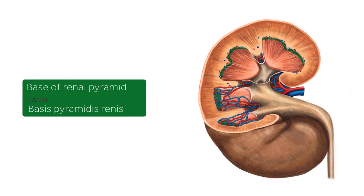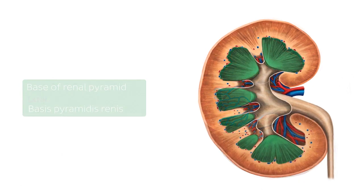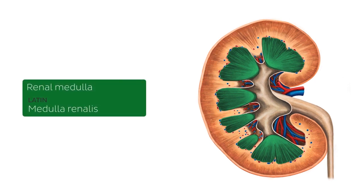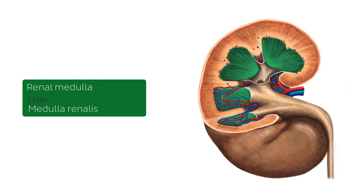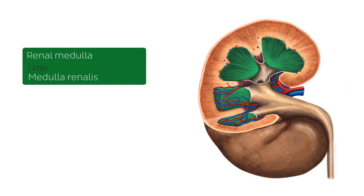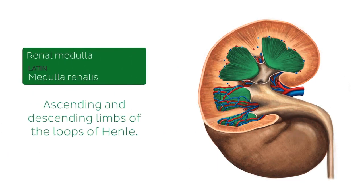The renal pyramids are formed by the renal medulla, which is the next structure we're going to be talking about. Now seen here highlighted in green, this is the renal medulla. The renal medulla is divided into renal pyramids that are separated by the renal columns of the renal cortex. The ascending and descending limbs of the loops of Henle, as well as the collecting ducts of nephrons, are located in the renal medulla.